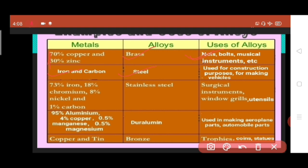Third one is stainless steel. It is made up of 73% iron, 18% chromium, 8% nickel, and 1% carbon. It is used for making surgical instruments, electrical instruments, window grills, utensils, etc. Duralumin is an alloy made up of 95% aluminium, 4% copper, 0.5% manganese, and 0.5% magnesium. It is used in making aeroplane parts and automobile parts.